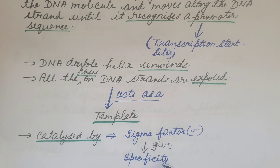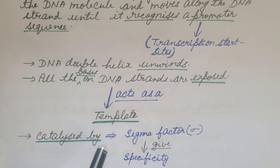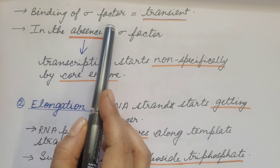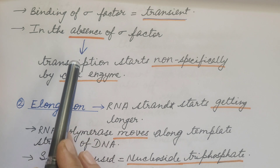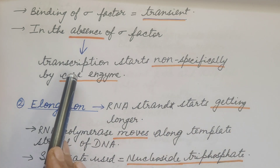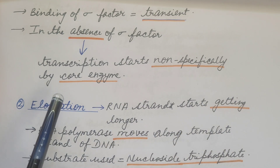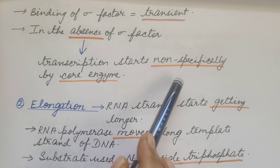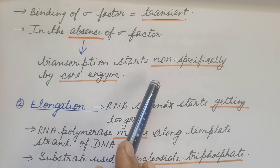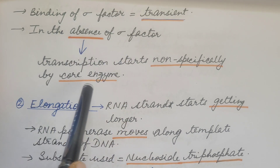The sigma factor gives specificity to RNA polymerase so that transcription is initiated at the specific promoter site. However, binding of the sigma factor is transient. In the absence of the sigma factor, transcription starts non-specifically by the core enzyme at any base of the DNA molecule. That is why the sigma factor or initiation factor provides specificity to the core enzyme.